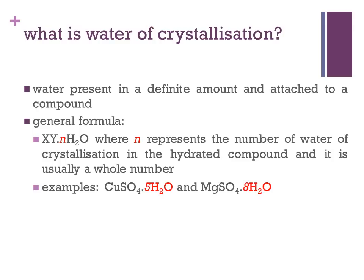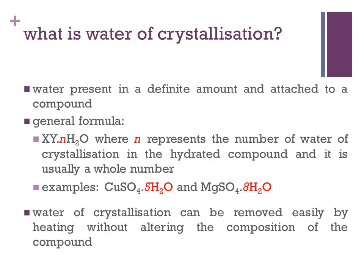Examples of compounds containing water of crystallization include copper(II) sulfate pentahydrate, where the number 5 indicates the degree of hydration, and magnesium sulfate octahydrate. Water of crystallization can be removed easily by heating the compound without altering its composition.